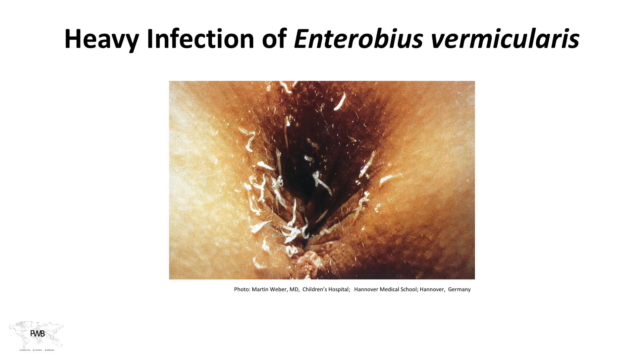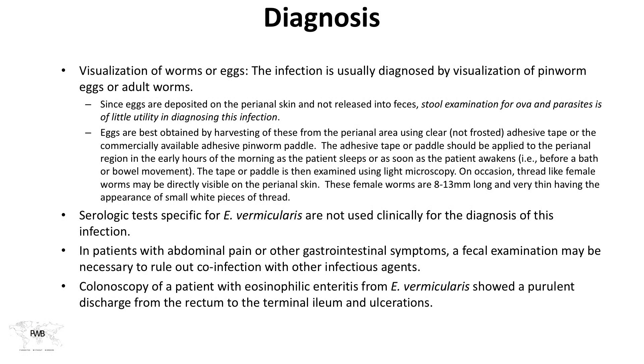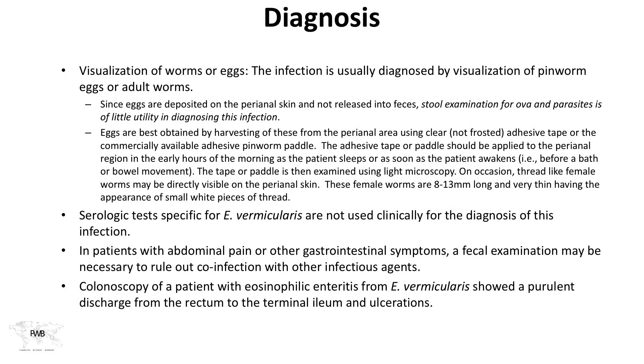This is a heavy infection of Enterobius vermicularis — you can see this image of the anus with the female worms. Visualization of the worms or eggs is the most common way this is diagnosed. This isn't a case where you order ova and parasites stool testing, since the eggs are deposited on the perianal skin and not released into feces — stool examination is of little utility. Eggs are best obtained by harvesting from the perianal area using clear adhesive tape or commercially available pinworm paddles, applied early in the morning before the patient bathes or has a bowel movement.